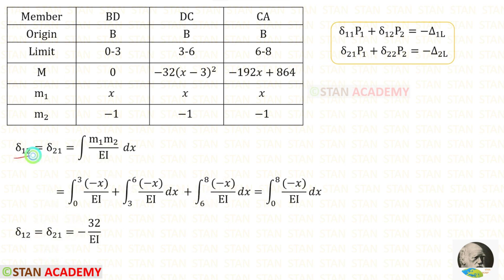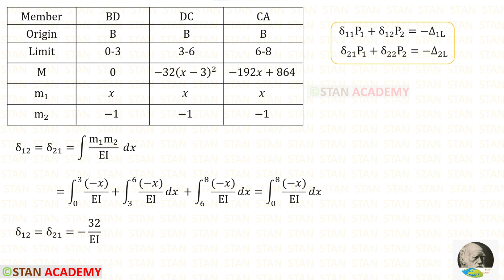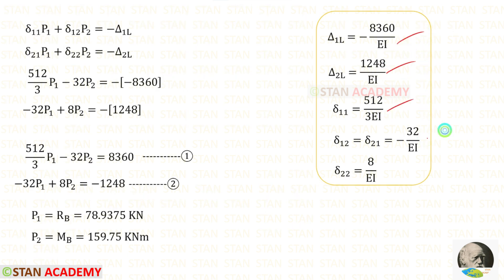Now let us find delta 12 and delta 21, both using the formula: integration of M1 times M2 upon EI dx. Since M1 and M2 are the same for all members, M1 times M2 = x times (minus 1) = minus x. Using the shortcut, delta 12 = delta 21 = minus 32 upon EI. For delta 22, using the formula integration of M2 squared upon EI dx and the shortcut, we get delta 22 = 8 upon EI. All displacements have now been found.